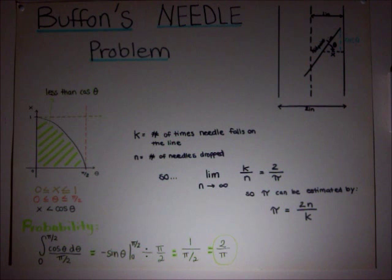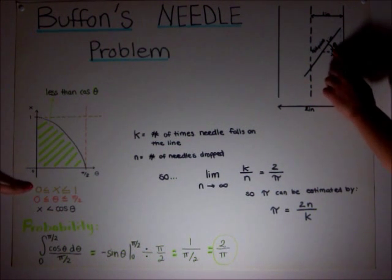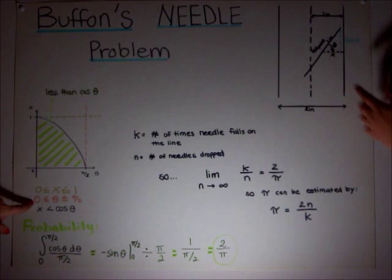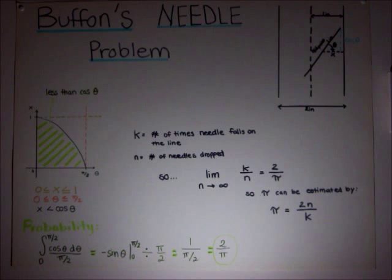Now we need to find what conditions make the needle land on a crack. x has to be between 0 and 1. Theta can only be from 0 to 90 degrees or pi over 2. x has to be less than cosine theta in order for the needle to cross the crack.